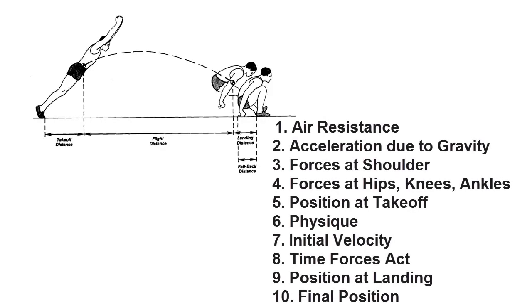So here's the list of all the circled boxes at the end of the flow diagram. We call these the determinants. From this list, we need to consider what factors we can actually change, and what factors can demonstrate important differences between a novice and an elite performer.